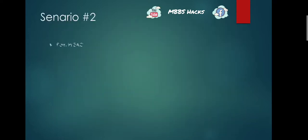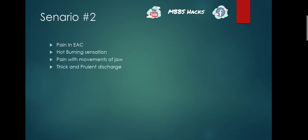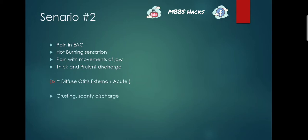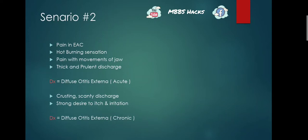Scenario two: there is pain in the external auditory canal, a burning sensation, pain with movements of the jaw, and thick purulent discharge. The diagnosis is acute diffuse otitis externa. The chronic form presents with crusting, scanty discharge, a strong desire to itch, and irritation. If proper management of acute otitis externa has not been done, it progresses to the chronic form of diffuse otitis externa.